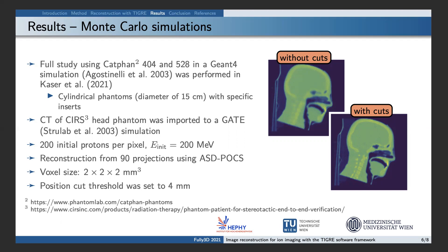To investigate biological materials, we imported a CT image of the Shepp-Logan head phantom into another Monte Carlo simulation. On the right side, you can see the reconstruction of 90 projections using 200 MeV protons with and without position cuts. The advantage of the position cuts can be visually observed regarding, for example, the transitions between bone and tissue in both reconstructions.